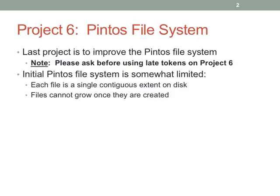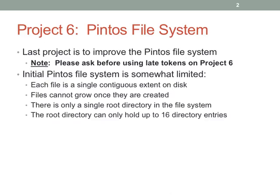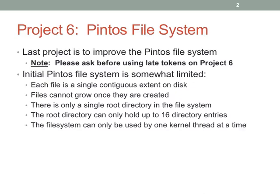The initial file system: files are contiguous extents, so we do continuous allocation, and files cannot grow — there's no appending, which is pretty constraining. There's only a single root directory, and it only has up to 16 entries. Also, a file system can only be used by one kernel thread at a time, so you all have this global file system lock, because the current file system is not re-entrant.